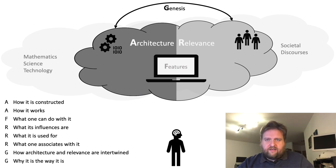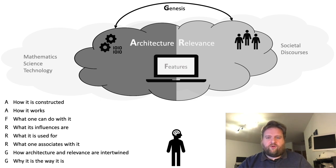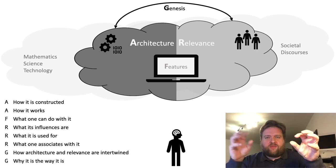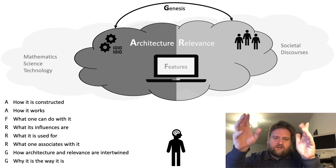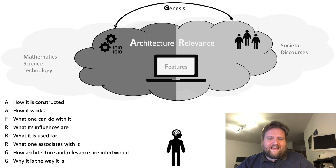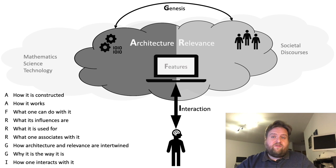So, technological descriptions are never completely neutral — they can only be relatively neutral if we take a certain context for granted. Let's get back to the image for a moment. We have many perspectives already: features, architecture, and relevance, all interrelated by looking at genesis. What is missing at the moment is the individual.